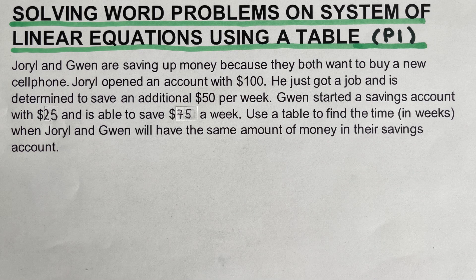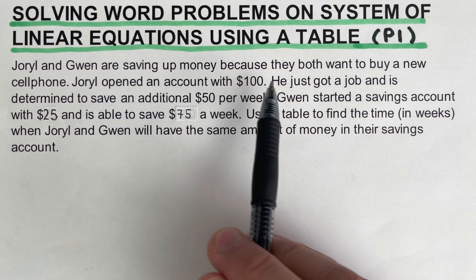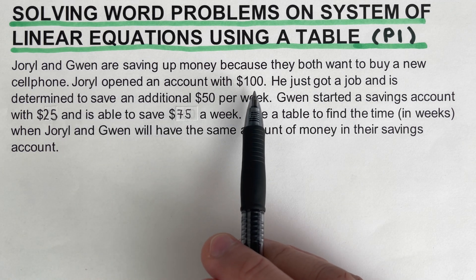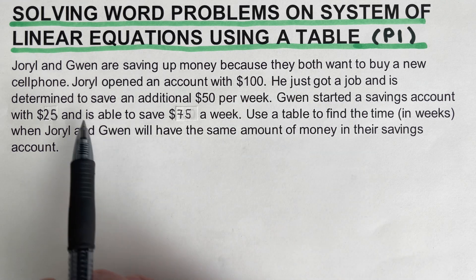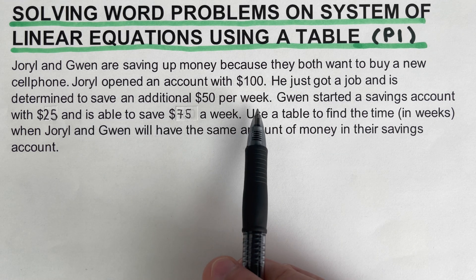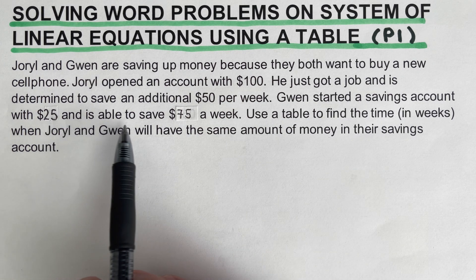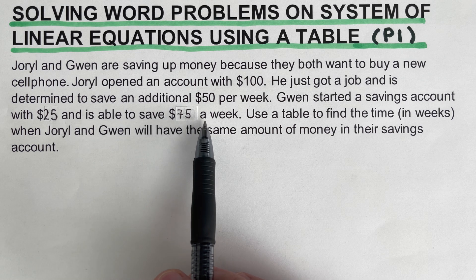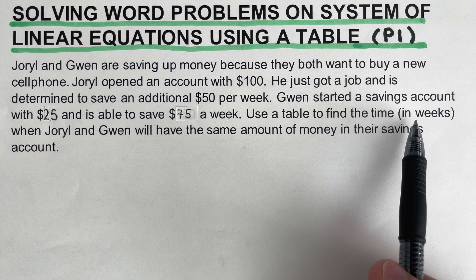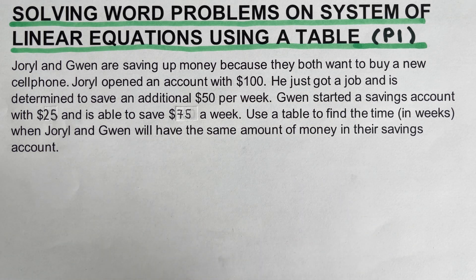Let's go over the first example. Joriel and Gwen are saving up money because they want to buy a new cell phone. Joriel opened an account with $100 and just got a job, determined to save an additional $50 per week. On the other hand, Gwen started a savings account with $25 and is able to save $75 a week. Use a table to find the time in weeks when Joriel and Gwen will have the same amount of money in their savings account.